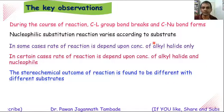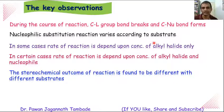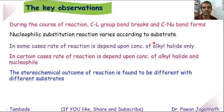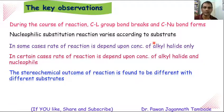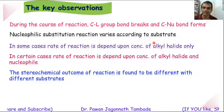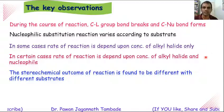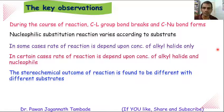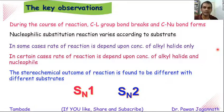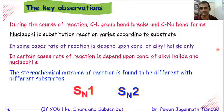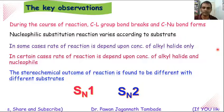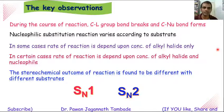Regarding stereochemistry, we observed that the stereochemical outcome of nucleophilic substitution reaction is different if we are using different starting materials, that is different substrates. Depending upon these key observations, we can categorize nucleophilic substitution reactions into two major types: SN1 reaction and SN2 reaction. In this video lecture, we will see the mechanism of SN1 reaction and the mechanism of SN2 reaction.